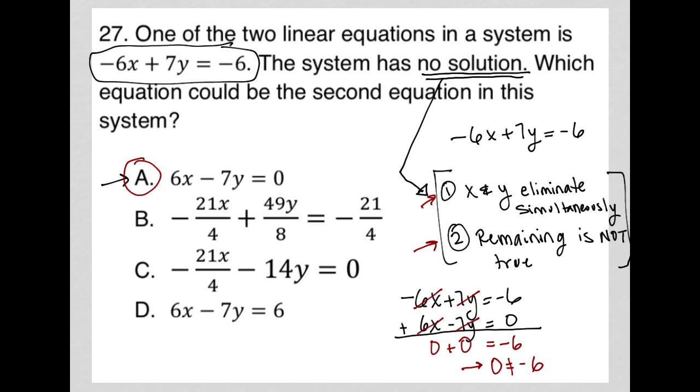Now choice D, you'll see it's very close. It's just that, again, if I have my negative 6x plus 7y, now I'm just putting my original equation under this one. So x would also cancel out, y would also cancel out, 6 minus 6 is also 0, so I'm left with 0 equals 0.